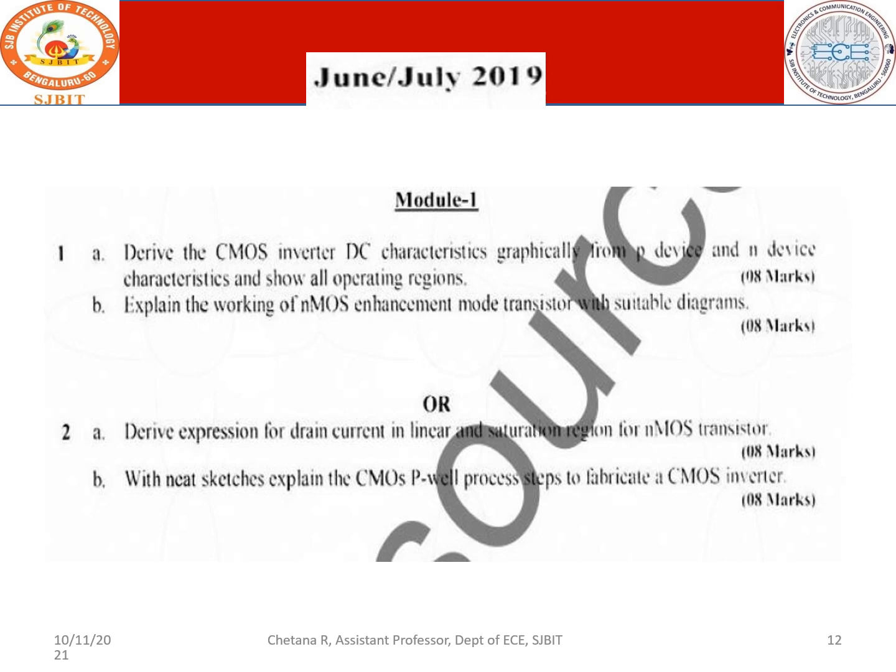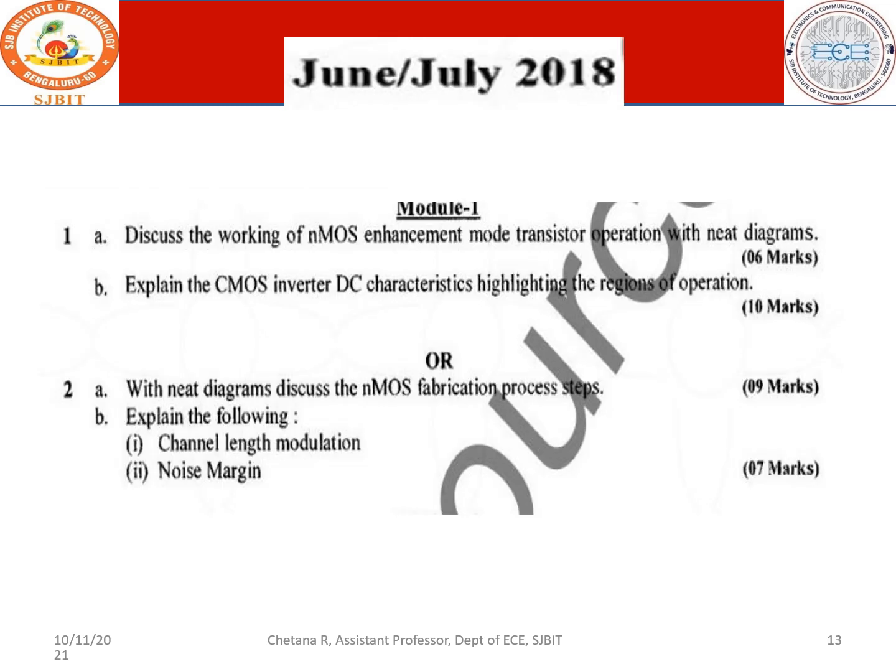Derive the expression for drain current in linear and saturation region for NMOS. For enhancement mode working, you explain three different gate voltage conditions: VGS negative (accumulation mode), VGS less than VT (depletion mode), and VGS greater than VT (inversion mode). Transfer characteristics with channel length modulation and noise margin are also asked for 3.5 marks.